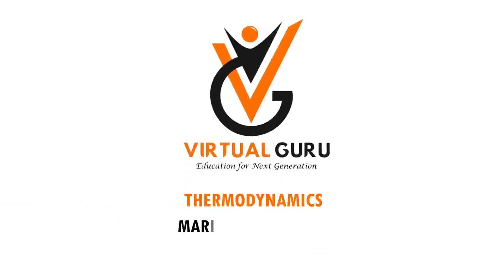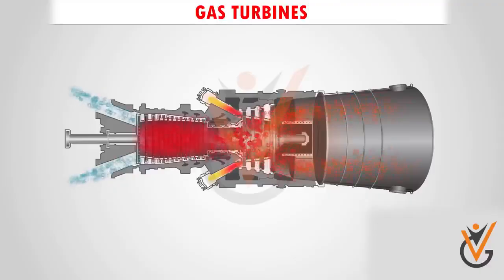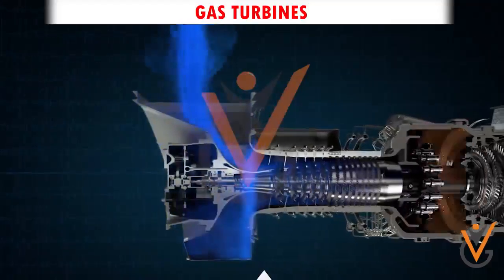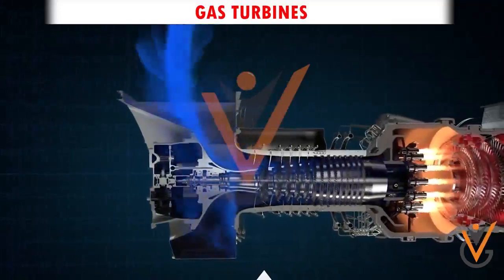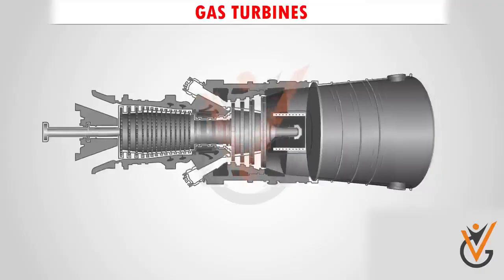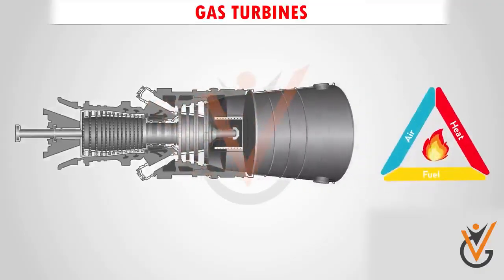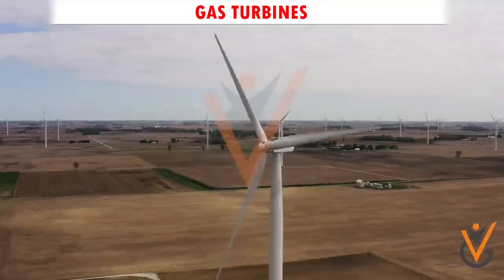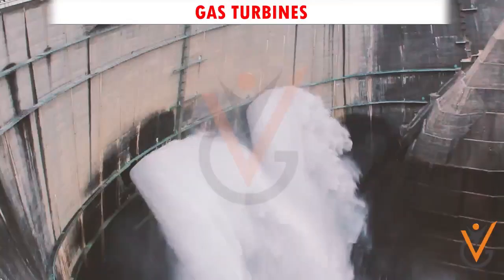A turbine is a wheel that absorbs kinetic energy from a fluid stream — water, steam, air, or other fluids. Turbines can come in the form of a windmill or the water turbine of a hydroelectric dam.